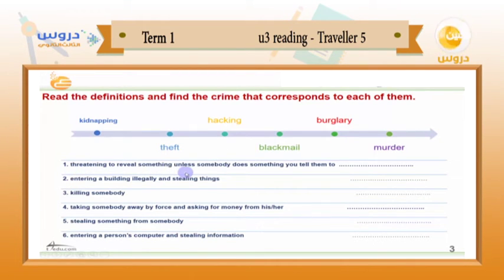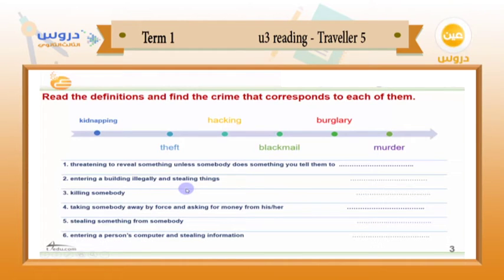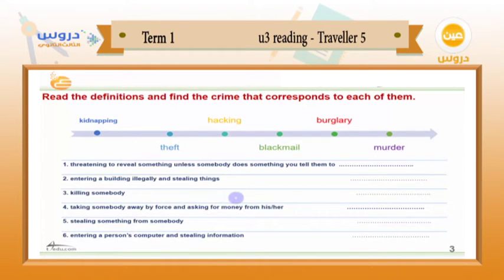Number one: threatening to reveal something unless somebody does something you tell them to. Number two: entering a building illegally and stealing things — think about the right answer. Number three: killing somebody. What is the right word for killing somebody? Is it kidnapping, hacking, murder, or blackmail? What is your choice?